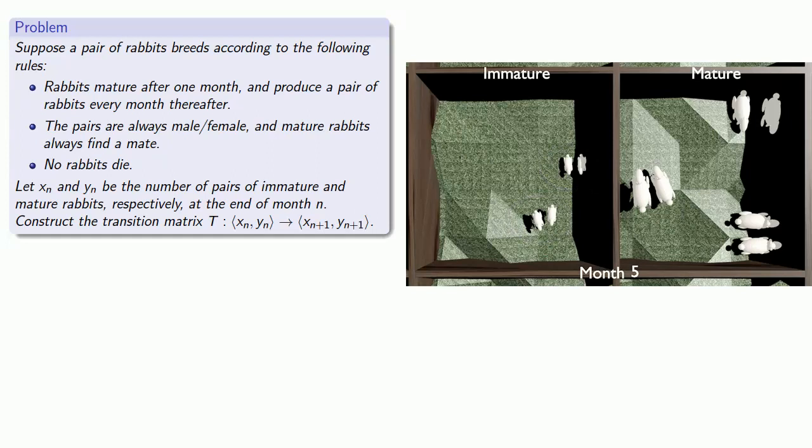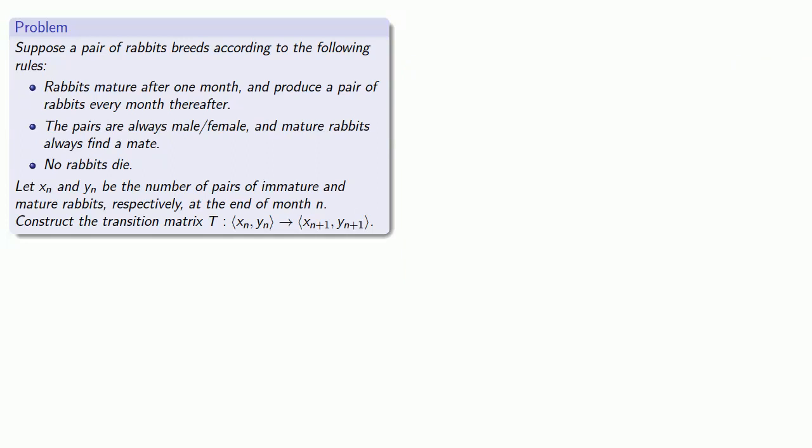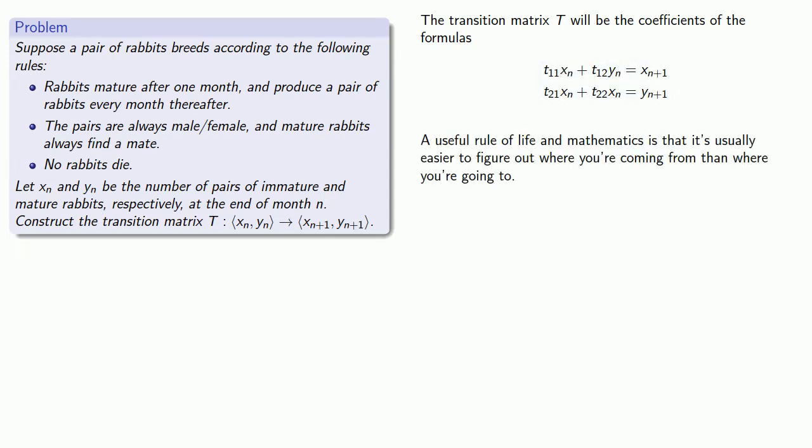But let's do a little bit of analysis. The transition matrix T will be the coefficients of the formulas that give us the values of xn plus 1 and yn plus 1 from the values of xn and yn. So a useful rule of life and in mathematics is that it's usually easier to figure out where you're coming from than where you're going to.